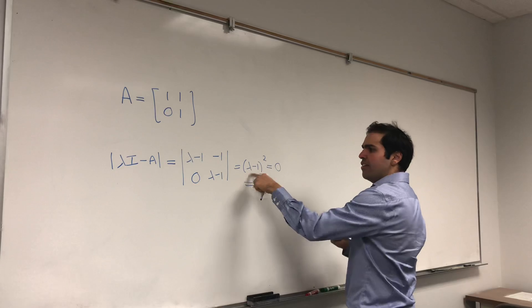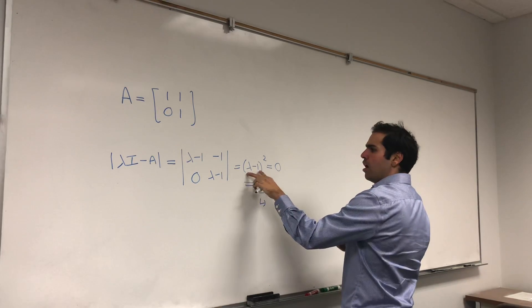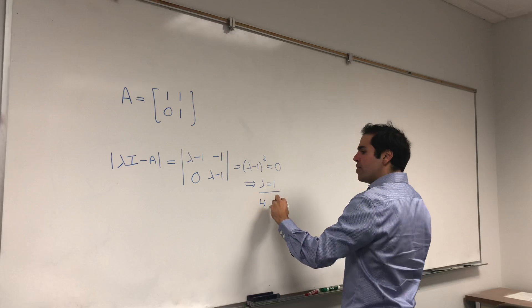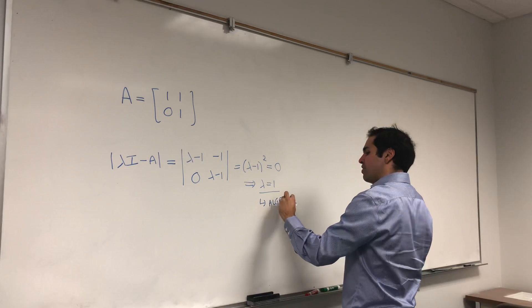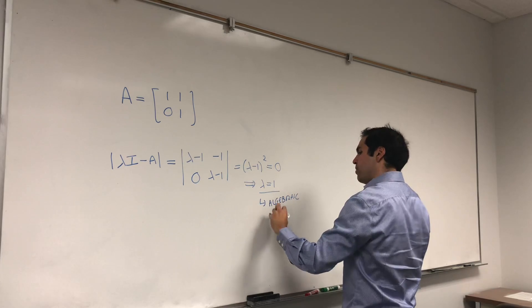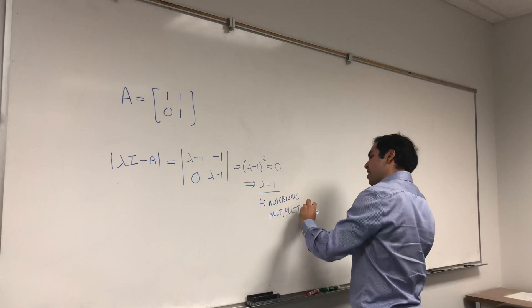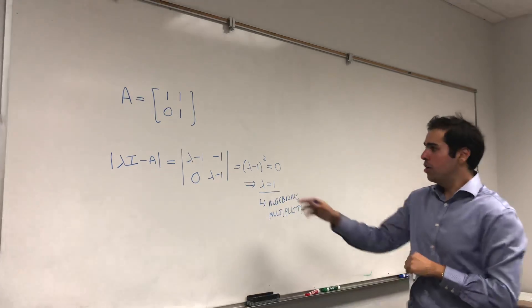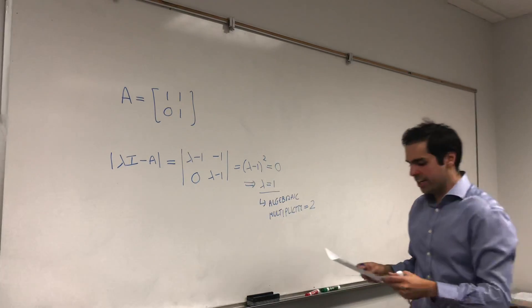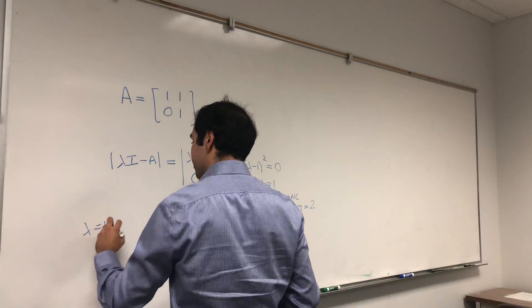And just one little remark, notice this eigenvalue has multiplicity two because it's a root of something squared. We call this algebraic multiplicity, and here the algebraic multiplicity is 2. On the other hand, let's really look at the eigenvectors.